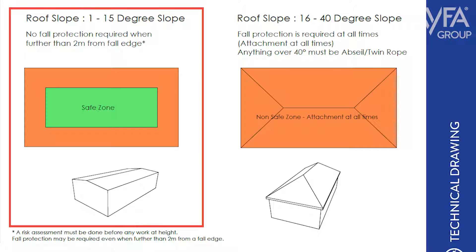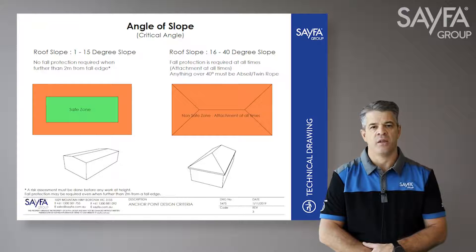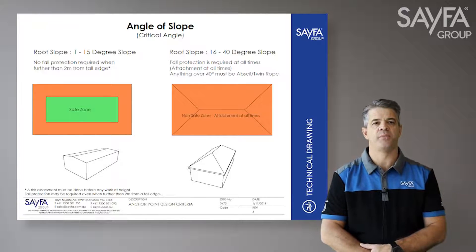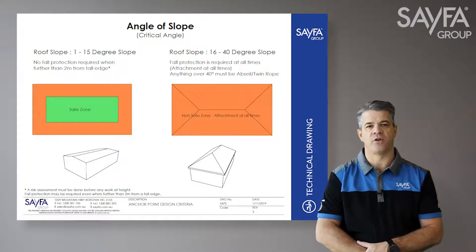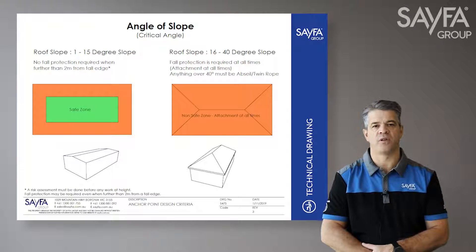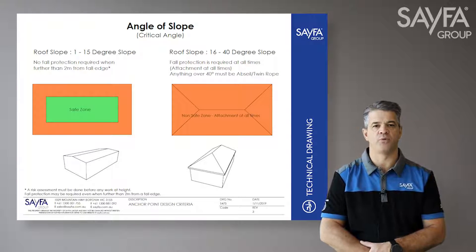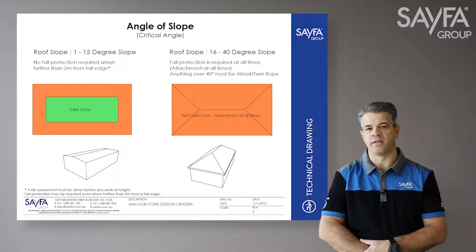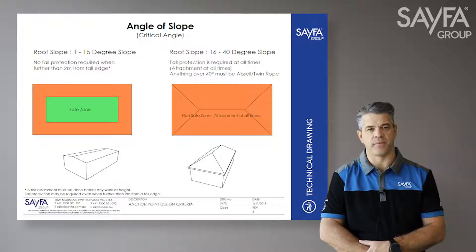Category One roofs: the operator only needs to be connected to the fall arrest system when accessing the danger zone, which is the edge proximity of the roof. The fall arrest system needs to be installed inside the safe zone of the roof so that the operator is working safely when connecting to the system.